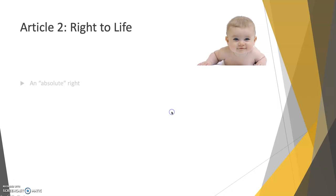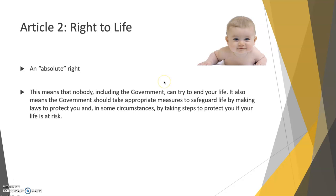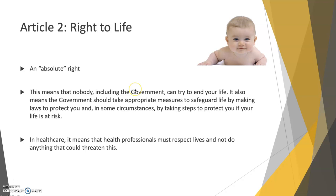The first right we're going to look at is the right to life. This is regarded as an absolute right — it means that nobody, not the government, not health professionals, not family members, nobody can try to end your life. It also means that the government should take appropriate measures to safeguard life by making laws to protect you, and in some circumstances by taking steps to protect you if your life is at risk or if you are at risk to yourself.